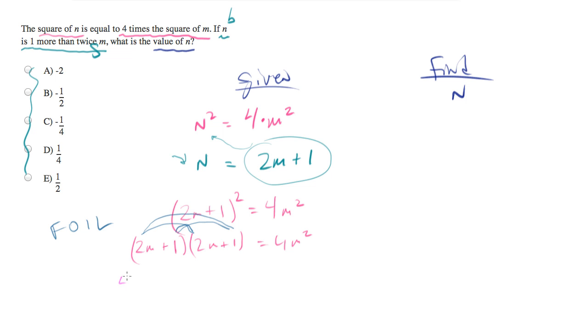2m times 2m is 4m squared plus 2m plus 2m plus 1 times 1 is 1 equals 4m squared. And, I see, they've saved us. Whew, thankfully.